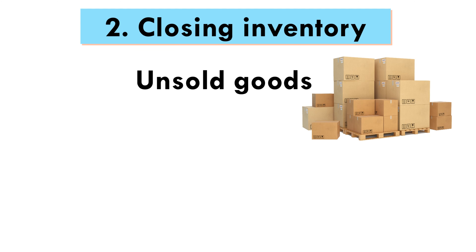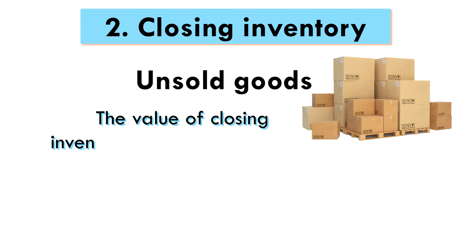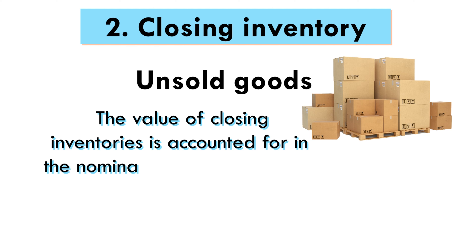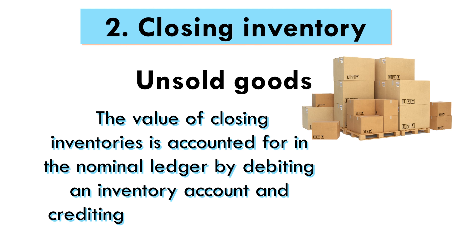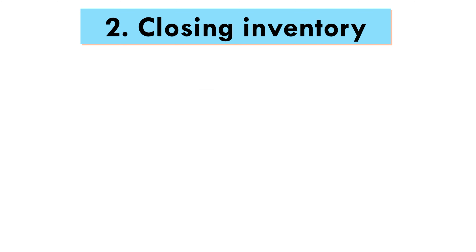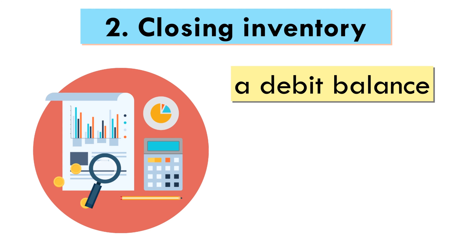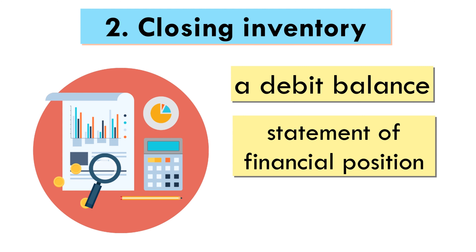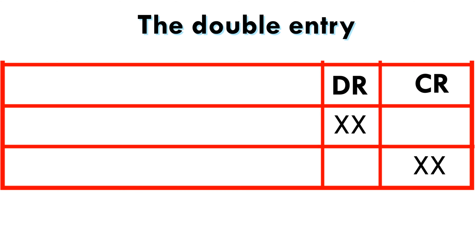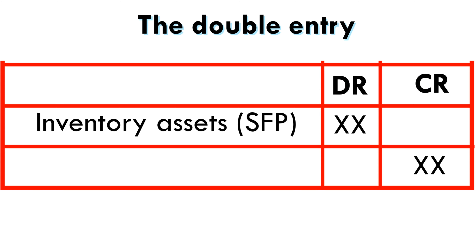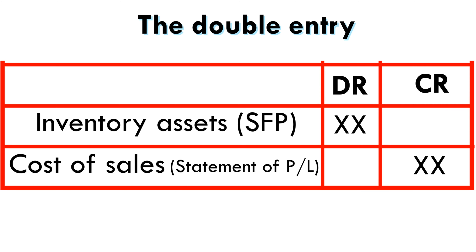Closing inventory: these are goods that remain unsold at the end of the accounting period. The value of closing inventory is accounted for in the nominal ledger by debiting the inventory account and crediting the trading account. Inventory will therefore have a debit balance at the end of the period and will be shown in the statement of financial position as a current asset. The double entry, therefore, is debit inventory assets in the statement of financial position and credit cost of sales.